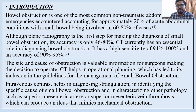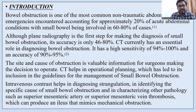Bowel obstruction is one of the most common non-traumatic abdominal emergencies, accounting for approximately 20% of acute abdominal conditions, with small bowel being involved in 60-80% of cases. Plain native X-ray is the first step for making the diagnosis, but currently CT has a greater sensitivity of 94-100% and an accuracy of 90-95%. The site and cause of obstruction is valuable information for surgeons making the decisions to operate.